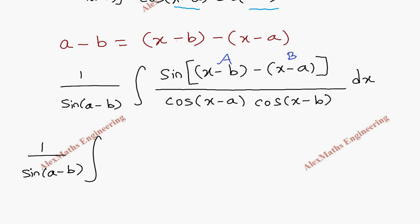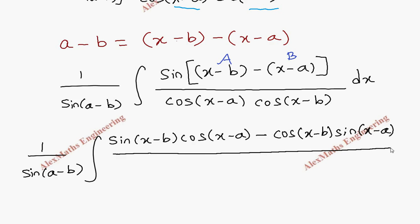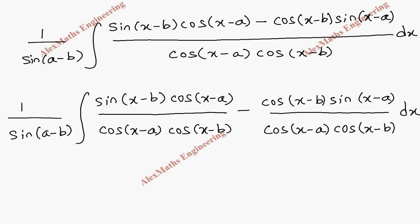Using the formula sin(A-B), the numerator becomes sin(x-b)cos(x-a) minus cos(x-b)sin(x-a), all divided by the denominator cos(x-a)cos(x-b), into dx. Now we divide individually and cancel the cosine terms where possible.